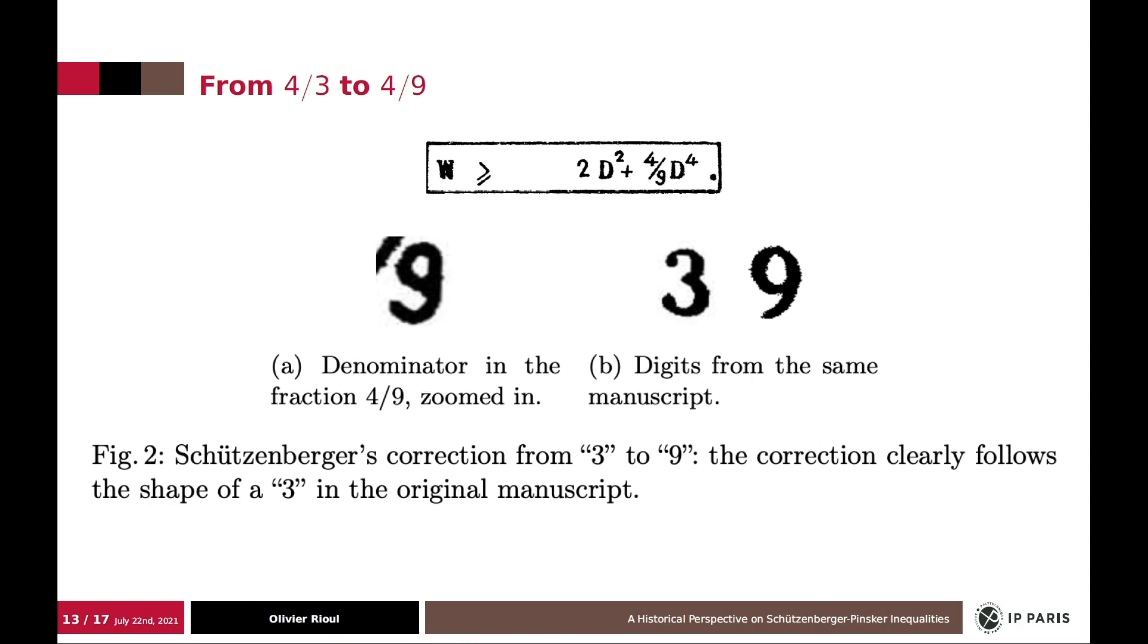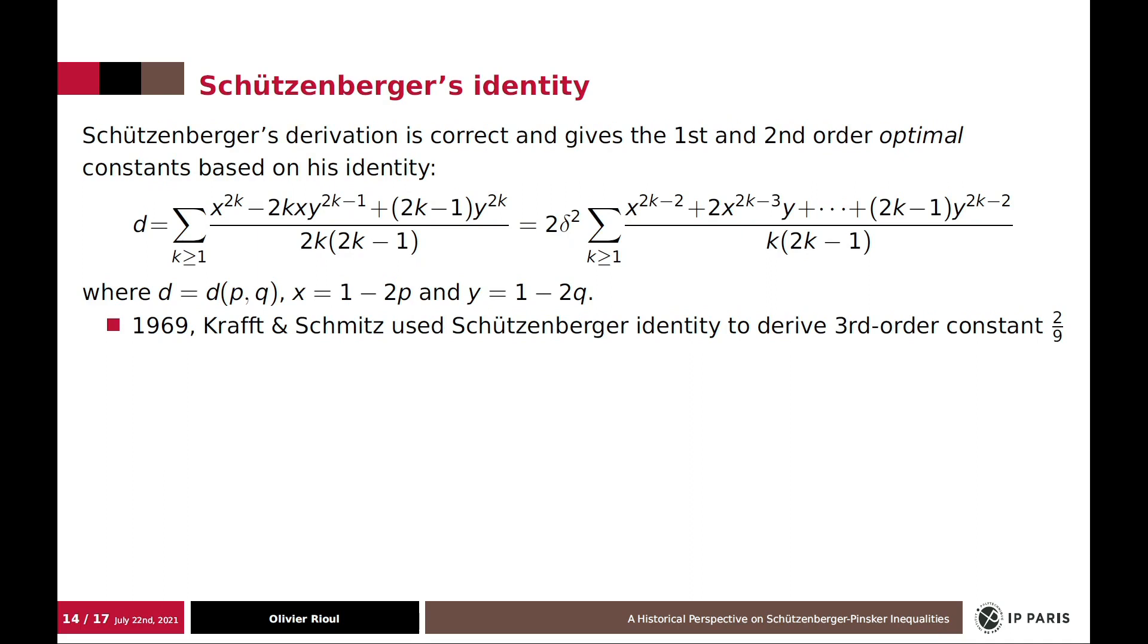So this is the story about the wrong constant. But still, Schützenberger derivation is correct, and gives the optimal first and second order terms of Pinsker inequality, and even more than that.